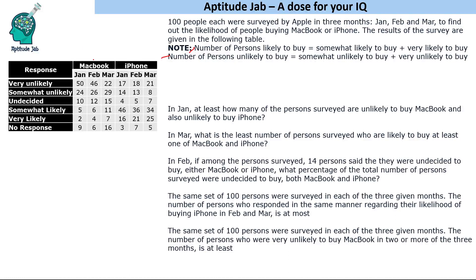For example, in January for MacBook, 50 say they are likely to buy, 24 say somewhat unlikely, and 50 say very unlikely — so 74 people are unlikely to buy. Similarly, for iPhone, 7 people are likely to buy. We can find the number of people who are likely or unlikely to buy this way — that data will be used going forward.